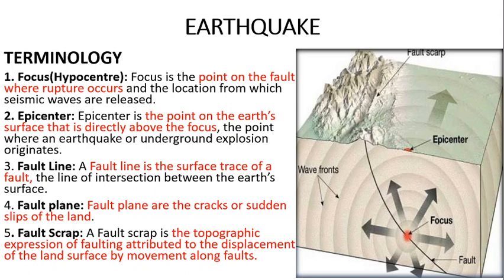Next is the fault line — it is a surface trace of a fault, which means the trace or line through which the fault will move. Next is the fault plane — the plane through which the entire mass of that particular tectonic plate or crust will move. Next is the fault scarp, which represents the top surface of the Earth where it is identified in relation to a fault.